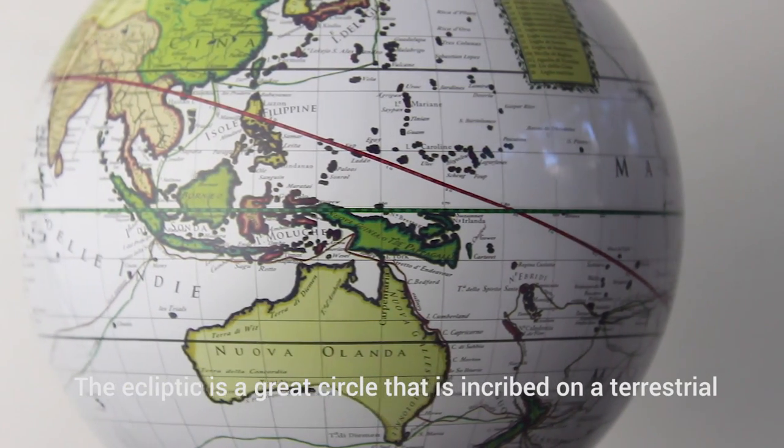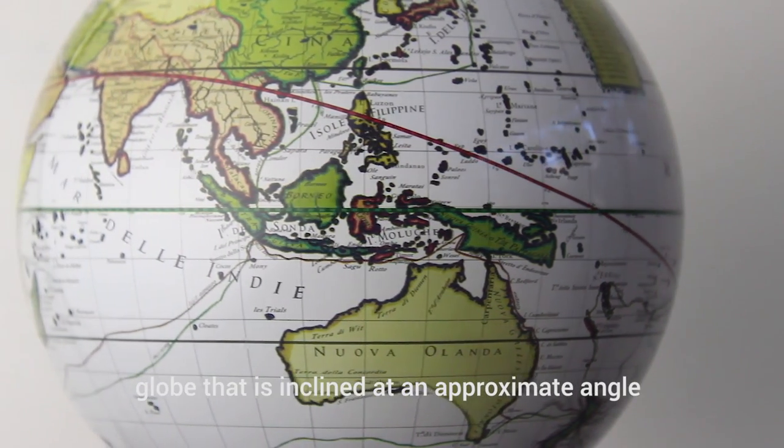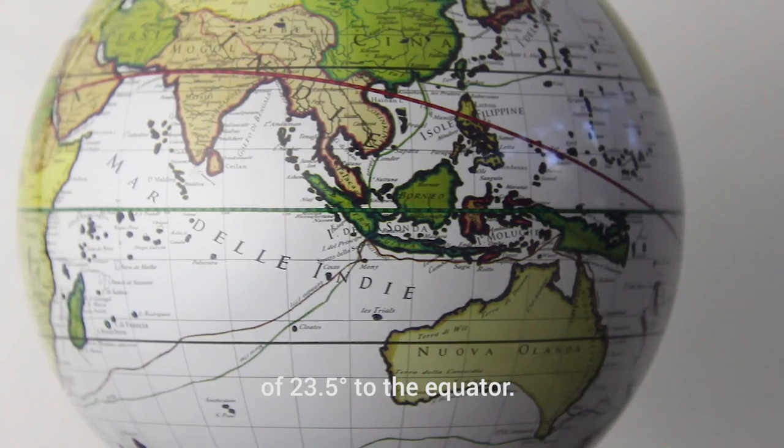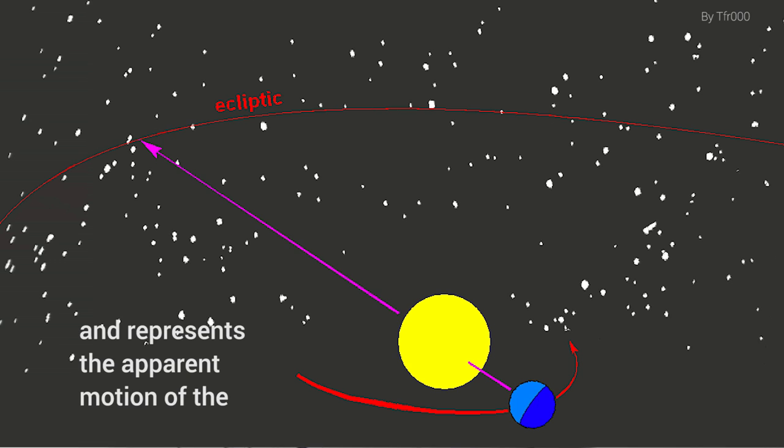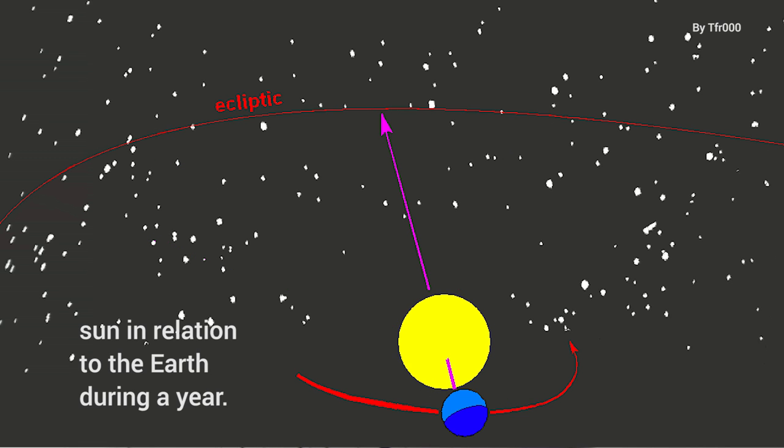The ecliptic is a great circle inscribed on a terrestrial globe that is inclined at an approximate angle of 23.5 degrees to the equator and represents the apparent motion of the Sun in relation to the Earth during a year.